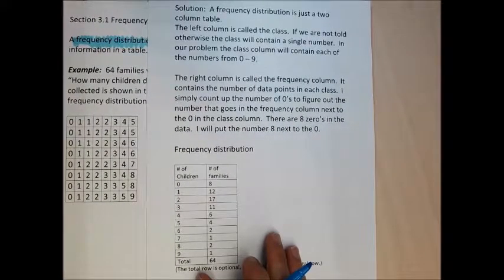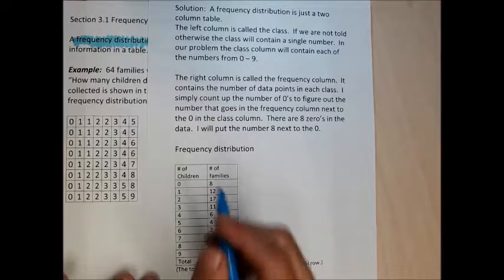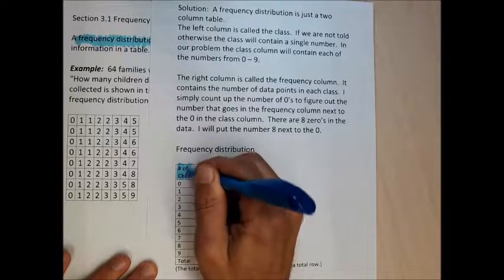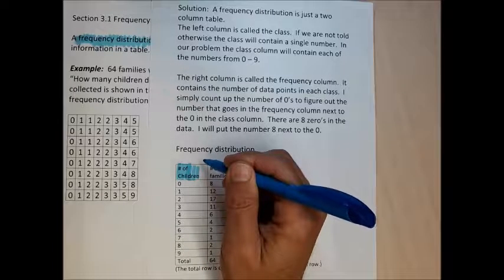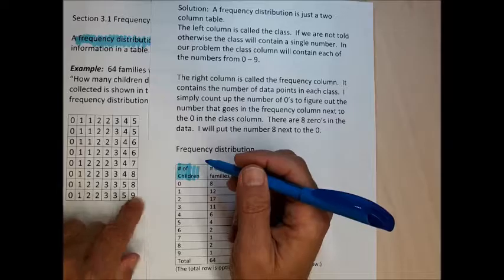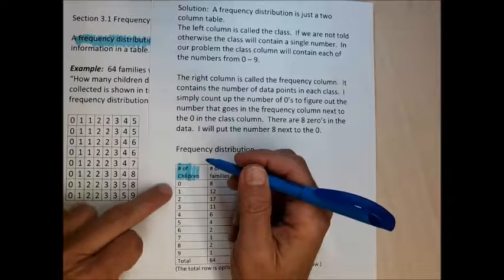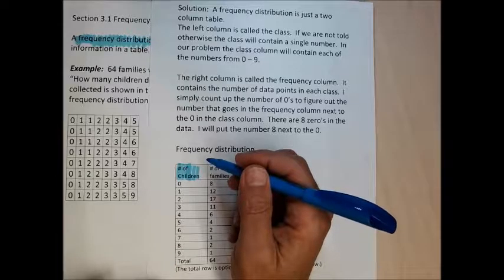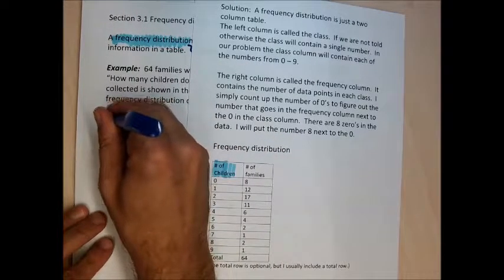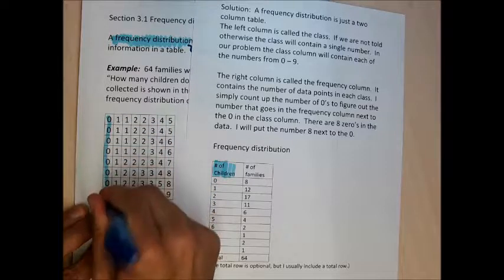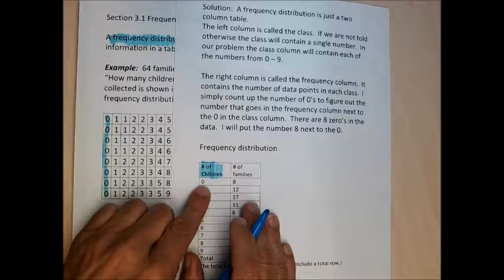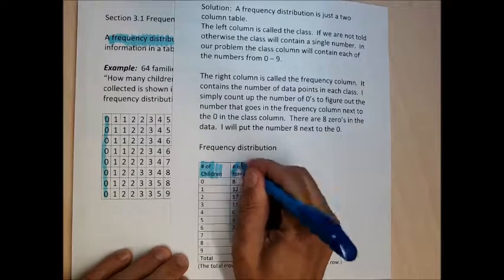You have lots of flexibility when you create a frequency distribution from data. I chose to make my frequency distribution have two columns. I made the left column the number of children that the families had. A lot of families had zero children, some had one, and the most any family had was nine. So in my left column I wrote the numbers zero through nine. In the right-hand column I wanted to describe the counts, so for zero children I counted up the number of families that had zero children — apparently there were eight families with zero children.